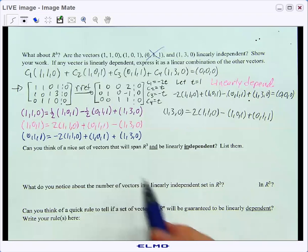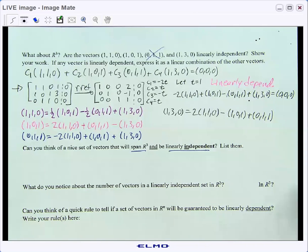So can you think of a nice set of vectors that you can cover all of R³ and at the same time be linearly independent? Go ahead and pause the video and we'll see if you come up with the same ones I come up with.